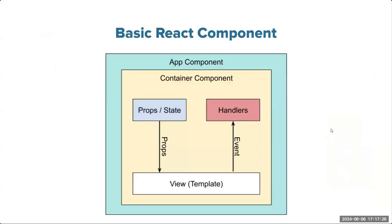Let's look at the basic React component in more depth. In a component, there are two types: a function component and a class component. The class component is also referred to as the stateful component — that is where you maintain the state. A state is very special in React because anything attached to the state object is reactive in the view. If you make changes to your state data, it will reflect in the view directly and usually live.